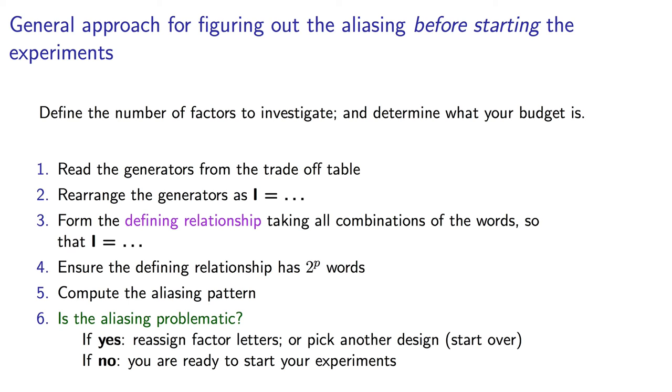Remember the defining relationship has 2 to the power of p words, where p is a measure of the reduction in our experimental effort. Use the full defining relationship to compute the aliasing pattern. Lastly, make sure the aliasing is not problematic.